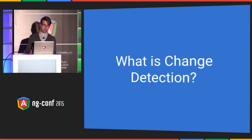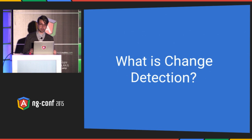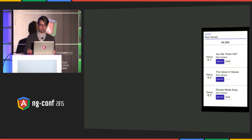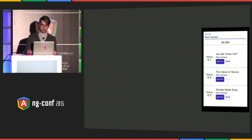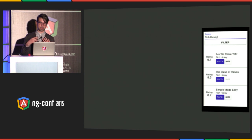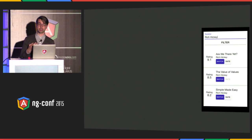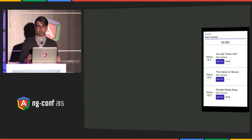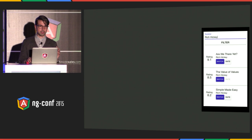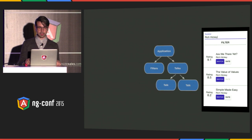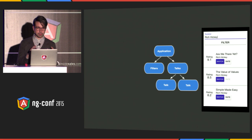Let's define what change detection is. To do that, let's look at this app. It's a very simple app. It has a list of technical talks that you can filter, watch, and rate. Any Angular 2 application will always have a tree of components. Let's say our application will have this tree.